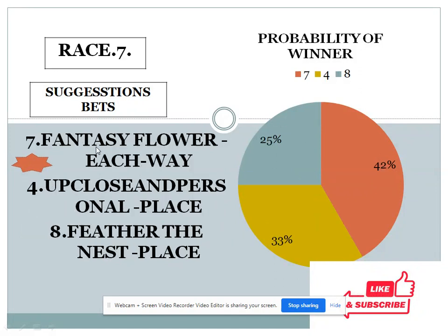Now we can talk about race seven. Three choices are given: number seven with 42 percent, number four with 33 percent, and number eight with 25 percent. If you see the gap between the top two choices it is nine percent, but when we see the gap between the bottom two choices it is also less than 10 percent. In this condition our system supports number seven in each-way prospect.